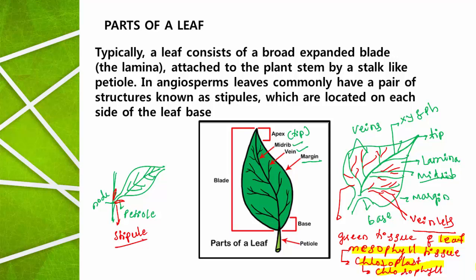In the next video I am going to explain about the types of venation, how to identify whether the leaf is of a dicot or monocot, and some very interesting facts about the leaf. Hope the explained part is clear for you. Thank you.